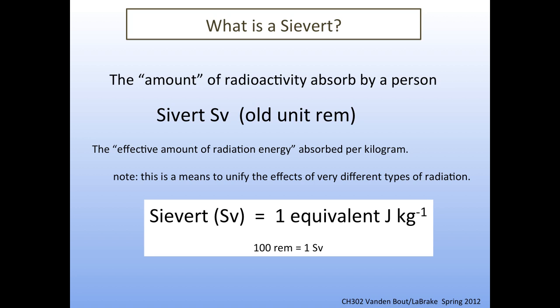For a small rat, a certain amount of radiation would be more harmful compared to a larger person. So a sievert is an equivalent joule per kilogram. The old unit of a rem, or Rankin Equivalent Man, is smaller — a hundred rem equals one sievert.